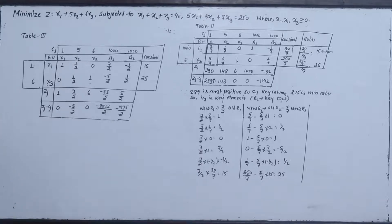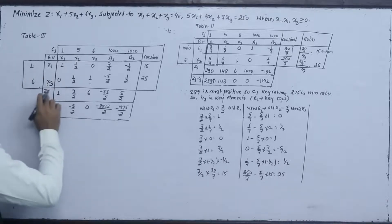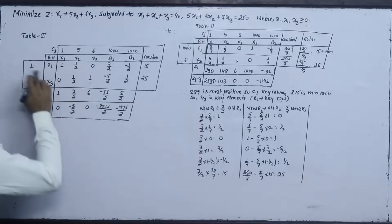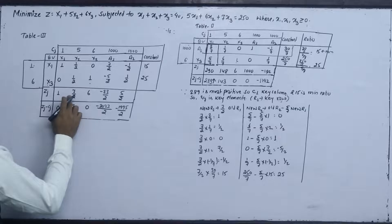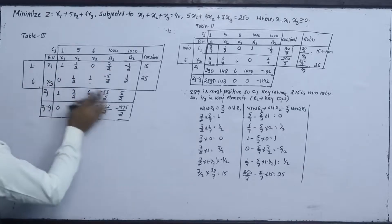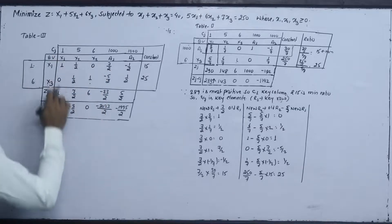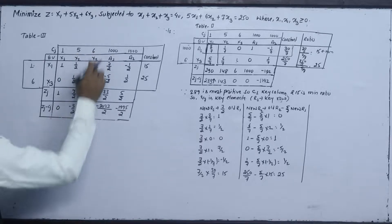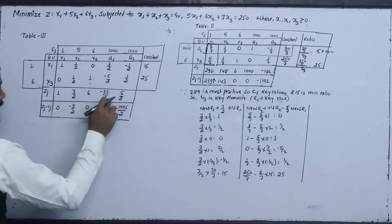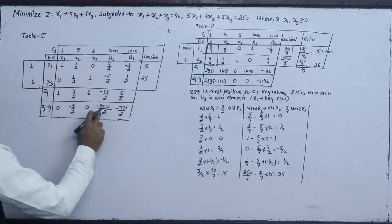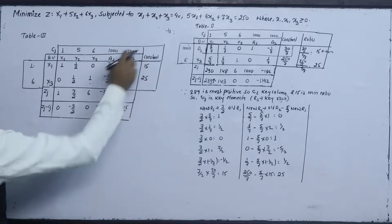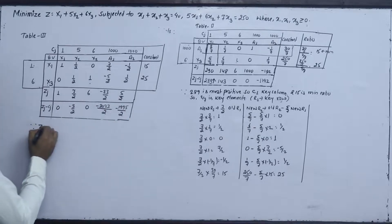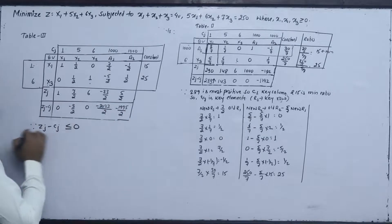We compute ZJ and ZJ-CJ values for the updated table: 1 minus 1 equals 0, 7/2 minus 5 equals negative 3/2, 6 minus 6 equals 0, minus 23/2, minus 1000, 23/2, 5/2, minus 1000, minus 1. ZJ minus CJ is less than or equal to 0.